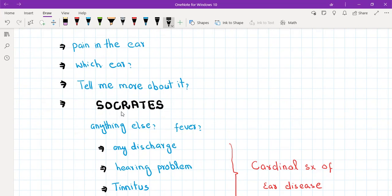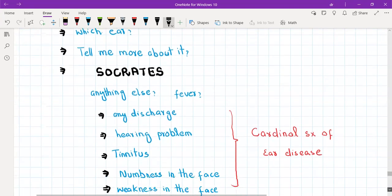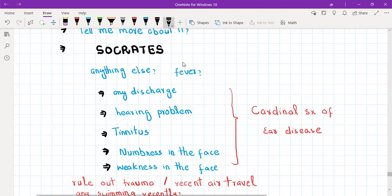As it is a pain symptom, the next thing you're going to ask is SOCRATES: site, onset, character, radiation, aggravating and relieving factors of the pain. After this, you should ask about any fever. If the patient tells you he has fever, which is usually common with otitis media, then you should explore fever a little bit - since when do you have the fever, and do OLDCARTA for the fever.